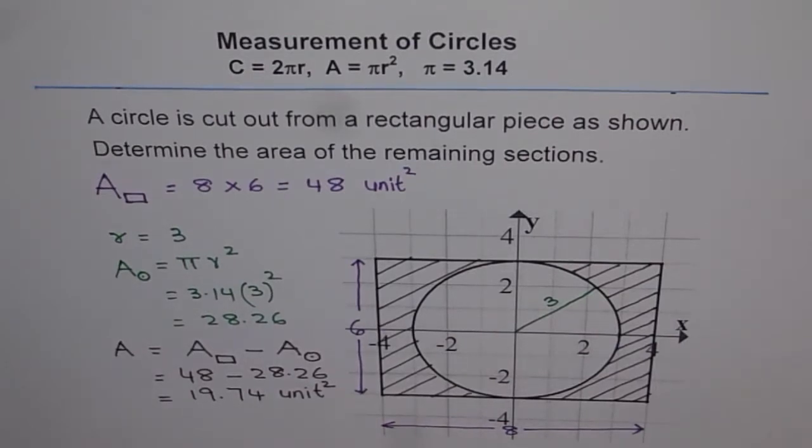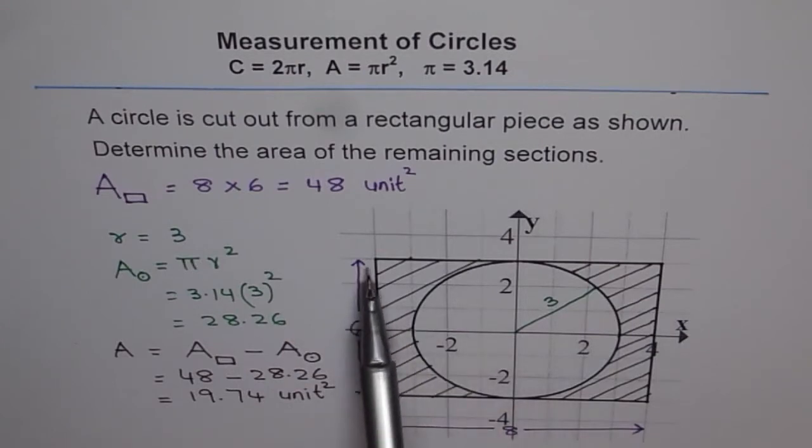Remember, units of area is always square. I hope you understand the process by which we can find the area of remaining section. First step is, find the area of rectangle and then area of circle. Once you take away area of circle from that of area of rectangle, you get area of remaining section. Thank you.